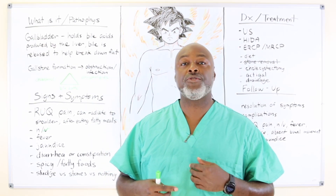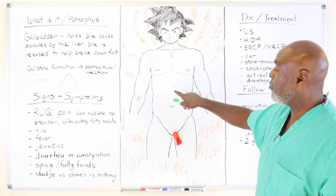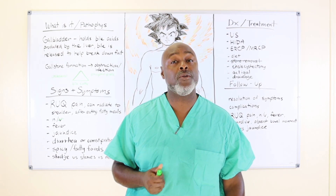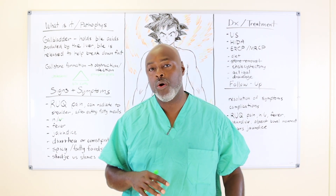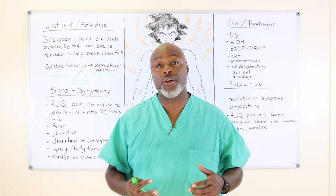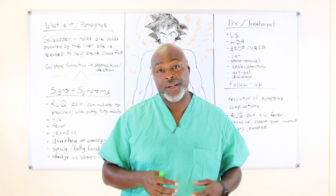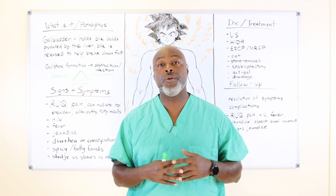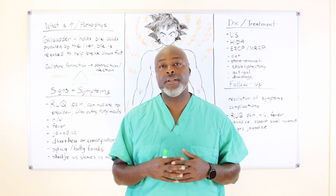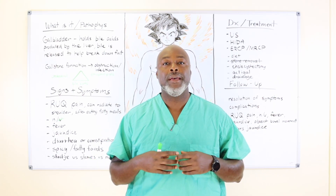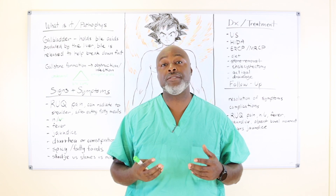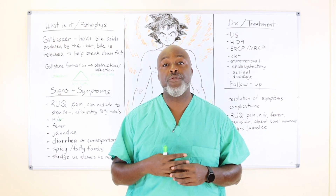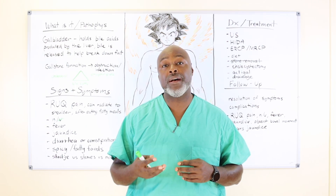Usually this pain starts in the epigastric area and radiates around the right side to your back. You can see variable amounts of diarrhea and constipation depending on your symptoms. If you have a biliary obstruction, you can have constipation. Bile salts can influence the amount of diarrhea or constipation you have — if you have too much bile salts, you can have diarrhea; if you don't have enough and your body is used to it, you can have constipation.